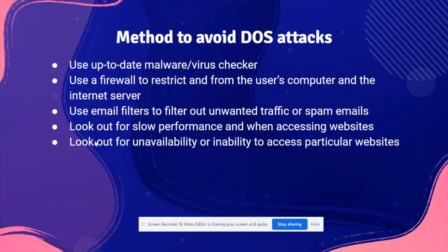To prevent a DOS attack, you should use an up-to-date malware and virus checker, which can detect looping programs and delete them. You should also use a firewall to restrict data to and from your computer and the internet server, and use an email filter to filter out unwanted traffic or spam emails. To identify a DOS attack, look for slow website performance and the inability to access certain websites — if websites are very slow and inaccessible, they are likely under a DOS attack.